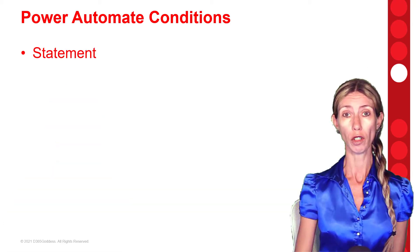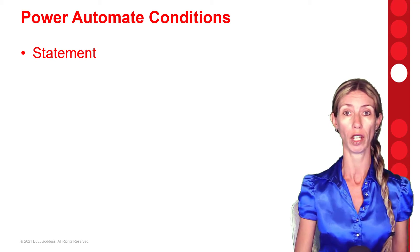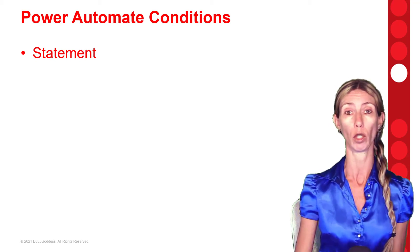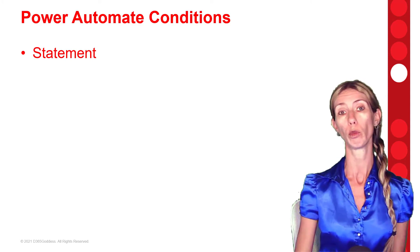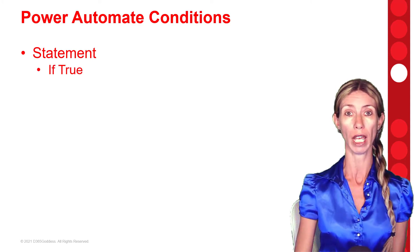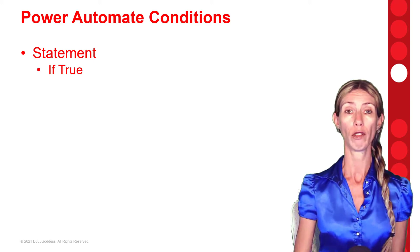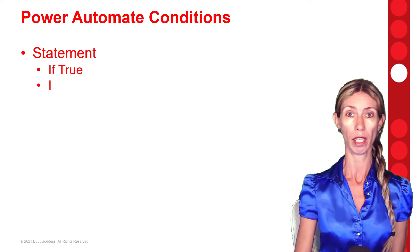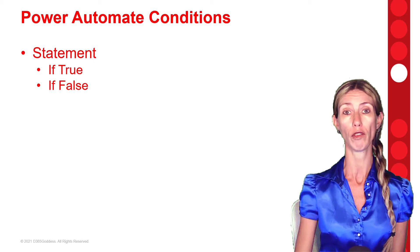Conditions always have a statement — this field contains data, or this is blank, or whatever that statement might be. And then we're going to have two outcomes. We're going to have an if-true: if that statement in that condition is true, we follow the logic in that if-true path. And if the statement is false, we follow the logic in the if-false path.